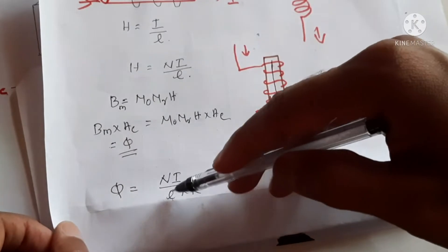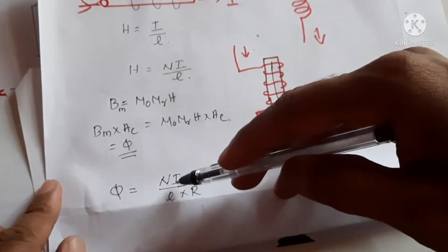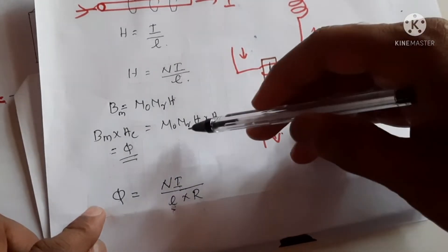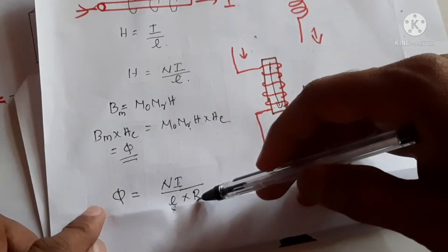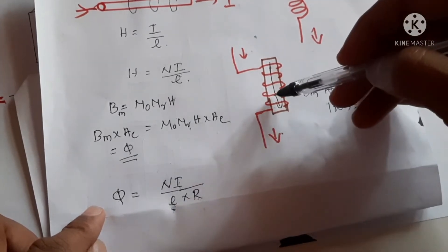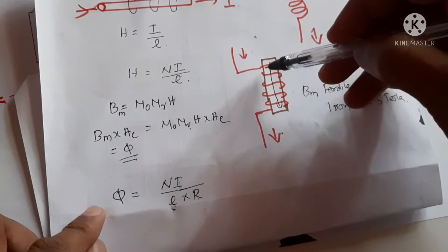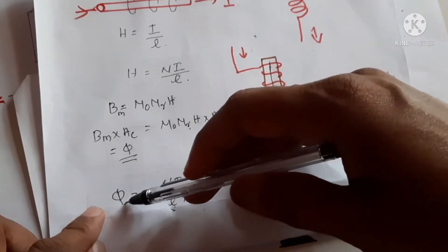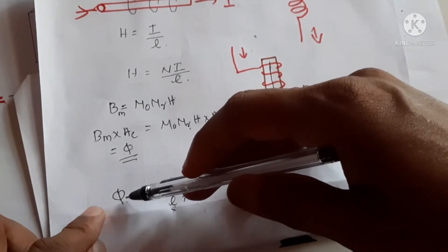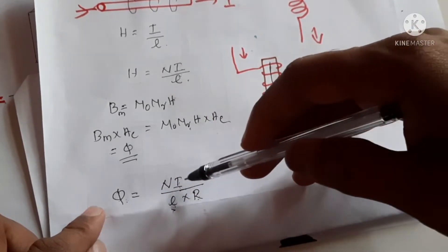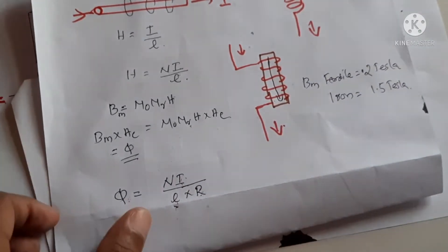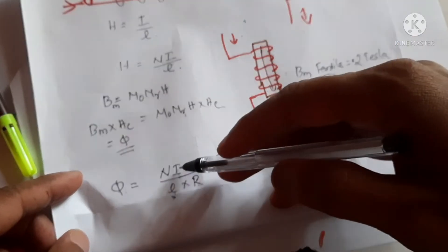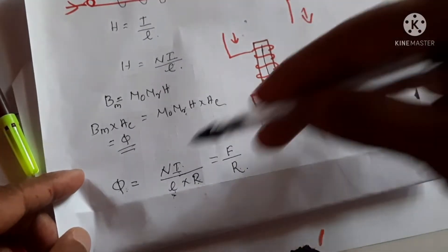As the magnetic field increases — the magnetic field being NI divided by L — reluctance is the opposite of mu_R: if reluctance increases, mu_R decreases, meaning the core cannot conduct more flux. So as reluctance increases, we can write flux as equal to magnetic field strength divided by reluctance — that is, NI divided by L divided by R. Both forms are the same.